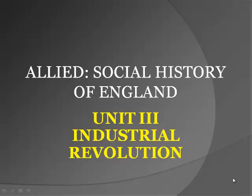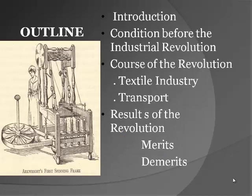Hi students, in today's class we are going to discuss about the Allied paper, Social History of England. We would deal with Industrial Revolution, Unit 3. Let us see the outline picture of Industrial Revolution: conditions before the Industrial Revolution, course of the revolution, textile industry, transport, results of the revolution, that is merits and the demerits.